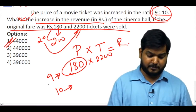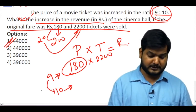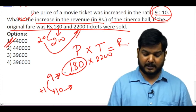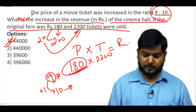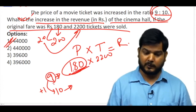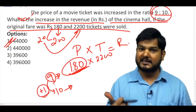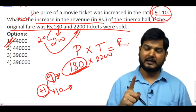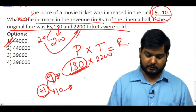The increase will also be shown directly. From 9 to 10, the change is 1. If the price of a ticket corresponding to 9 is Rs. 180, then 1 will correspond to Rs. 20. So the increase in fare is Rs. 20.